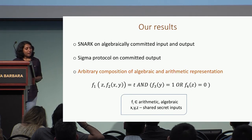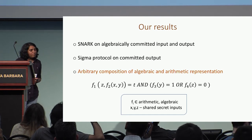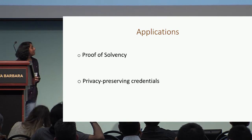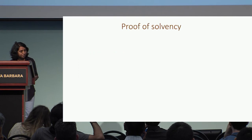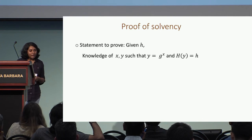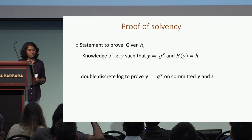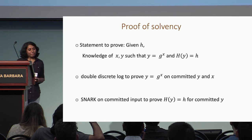We also give arbitrary composition of algebraic and arithmetic representations of functions in the paper. To outline how our techniques apply to composite statements: revisiting proof of solvency, the statement to prove is knowledge of X and Y such that Y = G^X and hash(Y) = H. We use the double discrete logarithm proof to prove Y = G^X on committed Y and X, and then use SNARK on committed input for hash(Y) = H, where the hash is represented as a circuit.